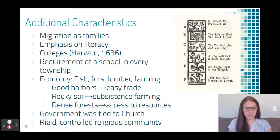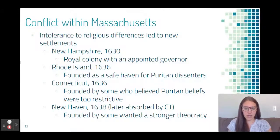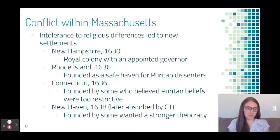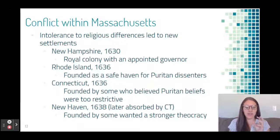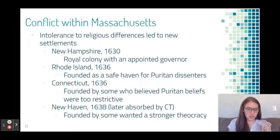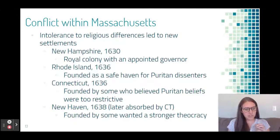Government was tied to the church and maintained rigid control of the community. Conflict developed in Massachusetts over religious differences, which is why other colonies formed. Rhode Island was founded for dissenters who argued against Puritan practices. Connecticut was formed by people who felt Puritan beliefs were too restrictive, while New Haven — eventually absorbed by Connecticut — was founded by those who thought the Puritan connection to government wasn't strict enough. So the conflict within Massachusetts led to the creation of several other New England colonies.